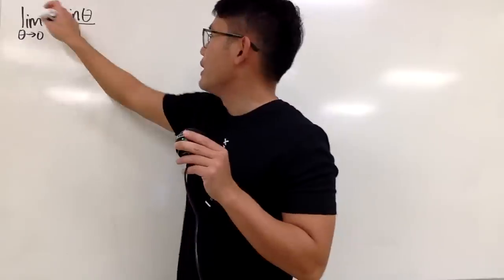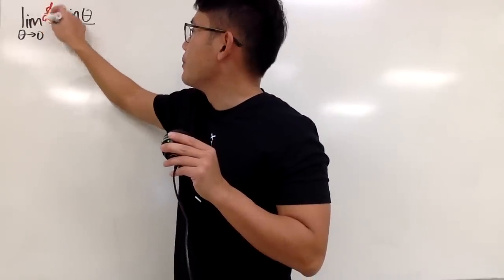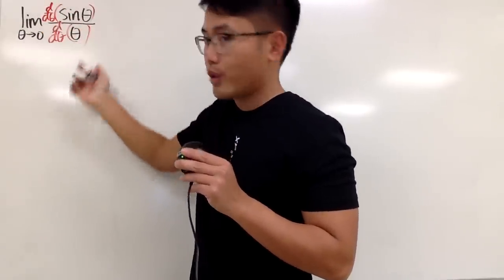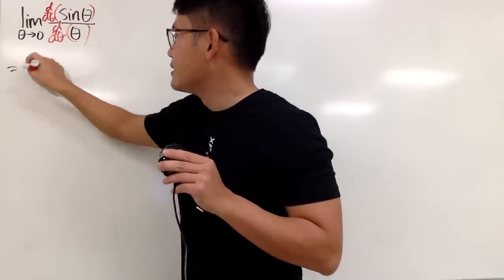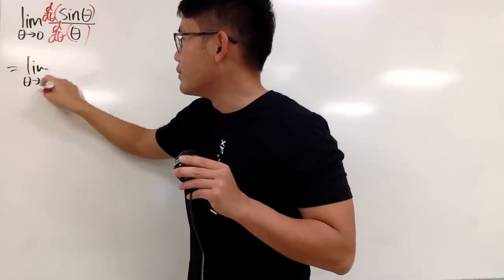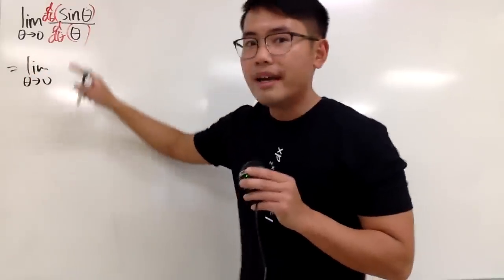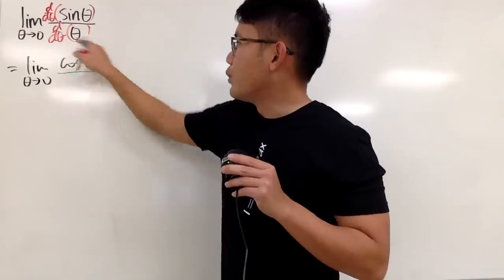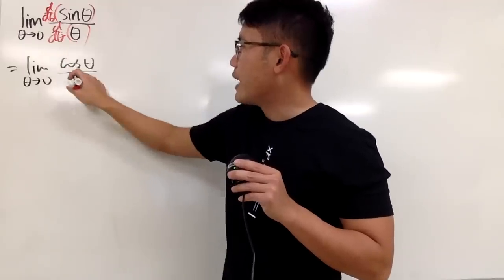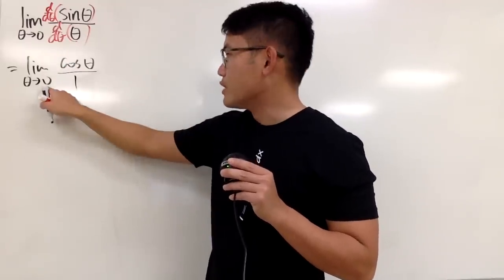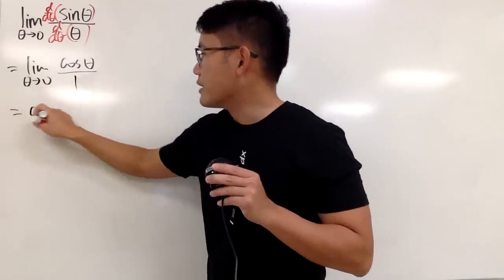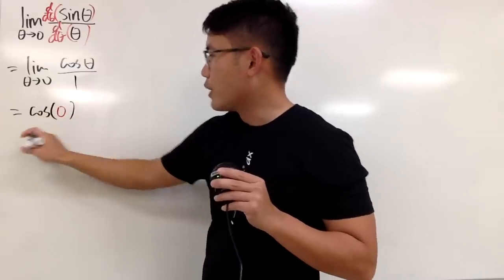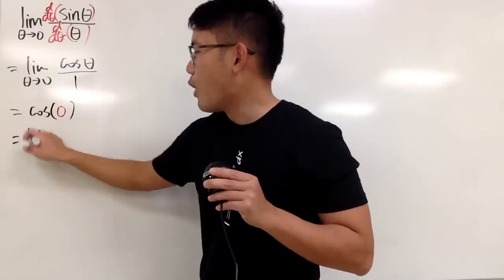So maybe let's just go ahead and do L'Hôpital's rule. We put down d/dθ on top and bottom, so we are showing work and our teacher will be happy. This is the limit as theta goes to 0, and when you differentiate sine theta we get cosine theta, and when we differentiate theta we just get 1. Now we can just put 0 right here, and in the end this is just cosine of 0, which is just 1.